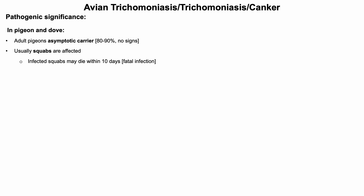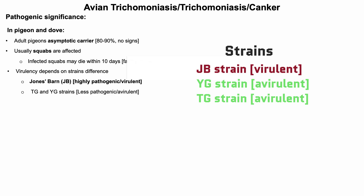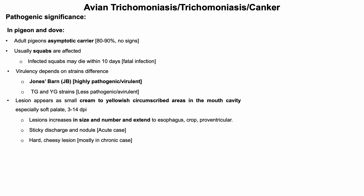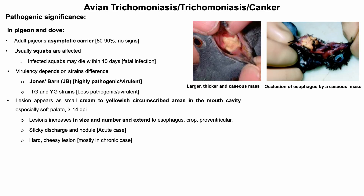The affected squab may die within 4 to 18 days of infection. If birds are infected with a virulent strain such as the JB strain, the severity is higher. Within 3 to 4 days post infection, creamy to yellowish circumscribed areas start to appear in the mouth cavity, especially on the soft palate. This lesion increases in size and number and extends to the esophagus, crop, and proventriculus. Later these lesions become thick, caseous, and yellow necrotic masses in the mouth cavity, which is characteristic of acute disease.